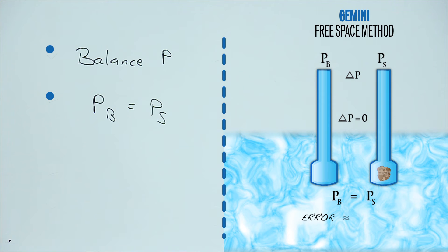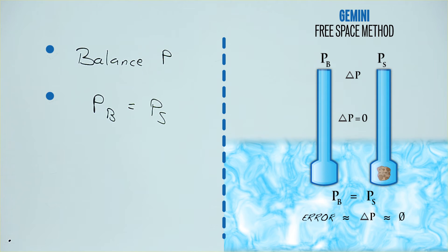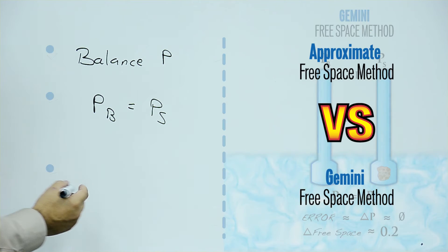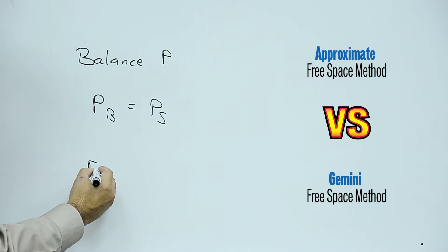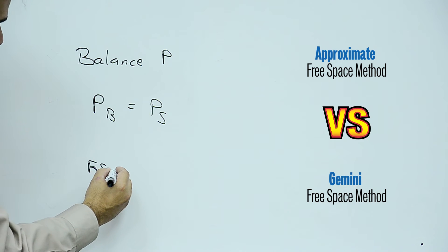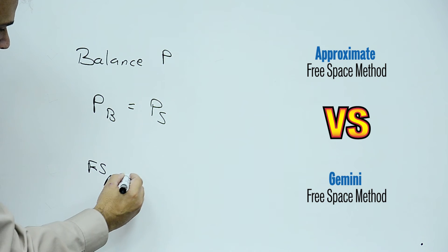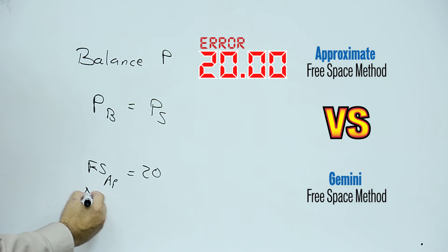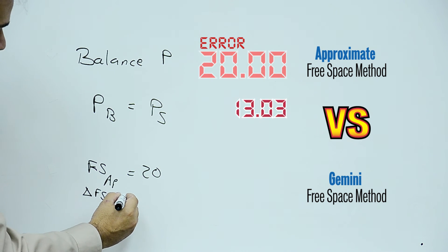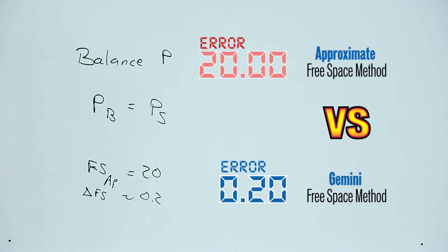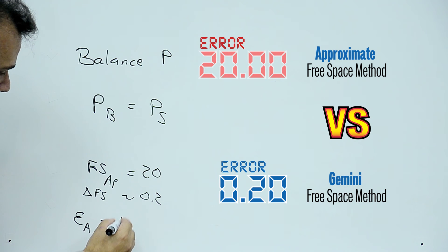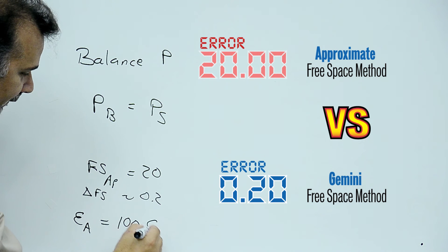So we reduce any of the errors induced by calculating the free space. Comparing the free space errors for the two: the free space for the approximate method is about 20, while the differential free space for the Gemini method is approximately 0.2. The error for the approximate method is about 100 times the error for the Gemini method.